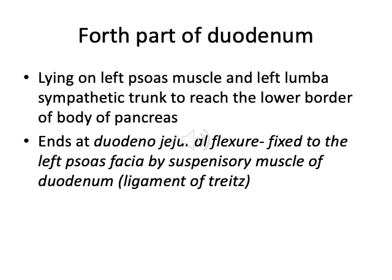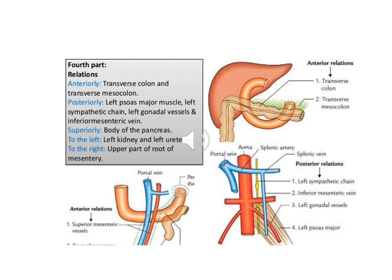The fourth part of the duodenum lies on the left psoas muscle and left lumbar sympathetic trunk to reach the lower border of the body of the pancreas. It ends at the duodenojejunal flexure and is fixed to the left psoas fascia by the suspensory muscle of the duodenum. Anteriorly, the fourth part is related to the transverse colon and transverse mesocolon. Posteriorly, it is related to the left psoas muscle, left sympathetic chain, left gonadal vessels, and inferior mesenteric vein. Superiorly it is related to the body of the pancreas, and from the left side to the left kidney and left ureter.